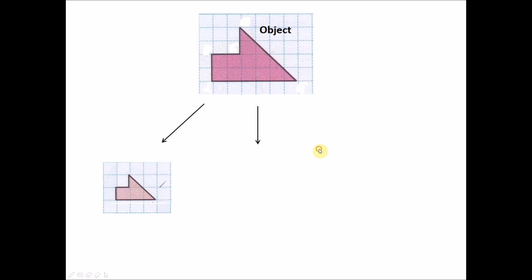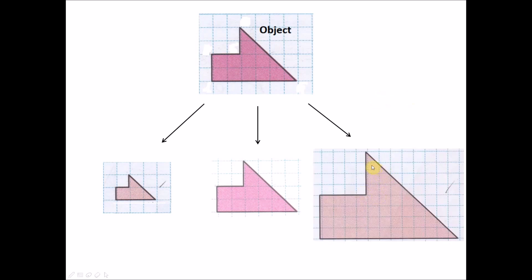Or I can draw it so it has the same size — two units, two units — all sides have the same measurement. I can also draw it so it has a bigger size: where the original has two units, I draw four units, which is double. So all sides here are double compared to the original. This is the idea of proportional — all these are called scale drawings.